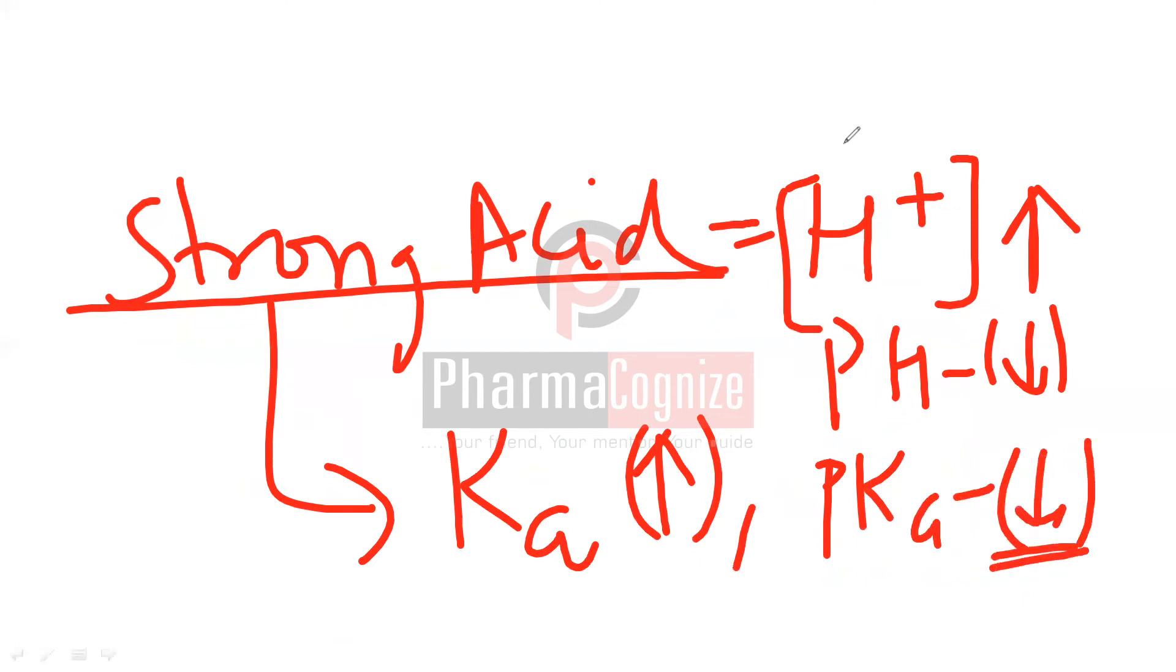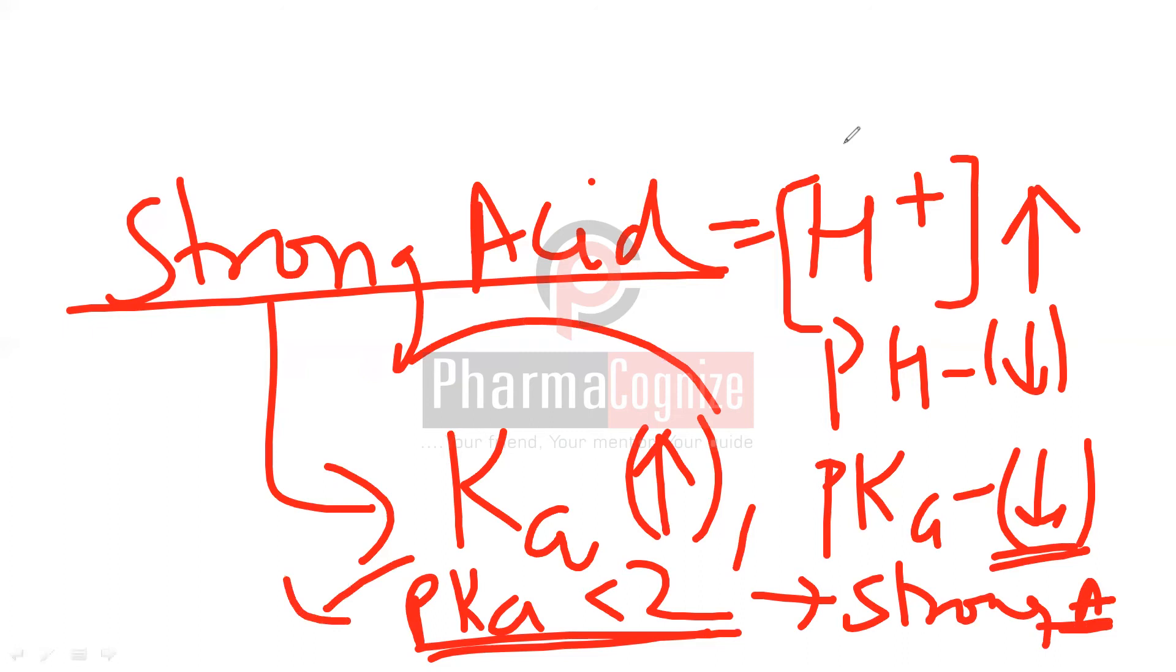So that means the rule is that if the pKa is less than 2, then I will call it a strong acid. Why are we calling it a strong acid? Because pKa is less, that means Ka is more. That means ionization is almost 100%. That's why this relationship arises. So this is the relationship between pH and pKa.